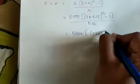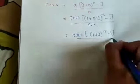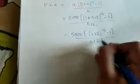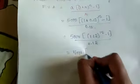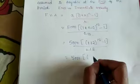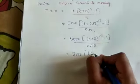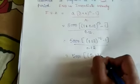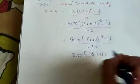So calculate: 5000 into 1.12 to the power of 15 minus 1 divided by 0.12. Take 1.12 and multiply it 15 times.